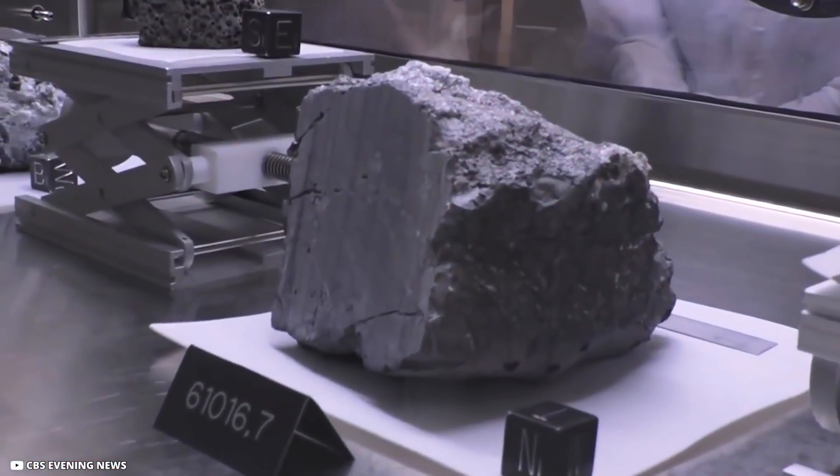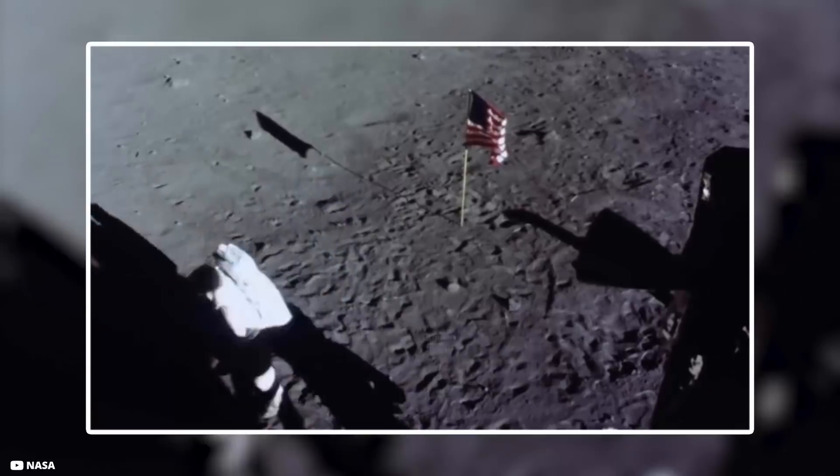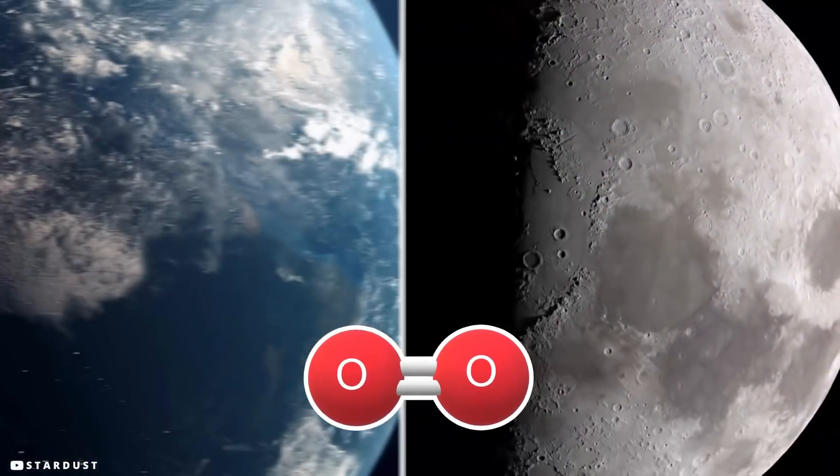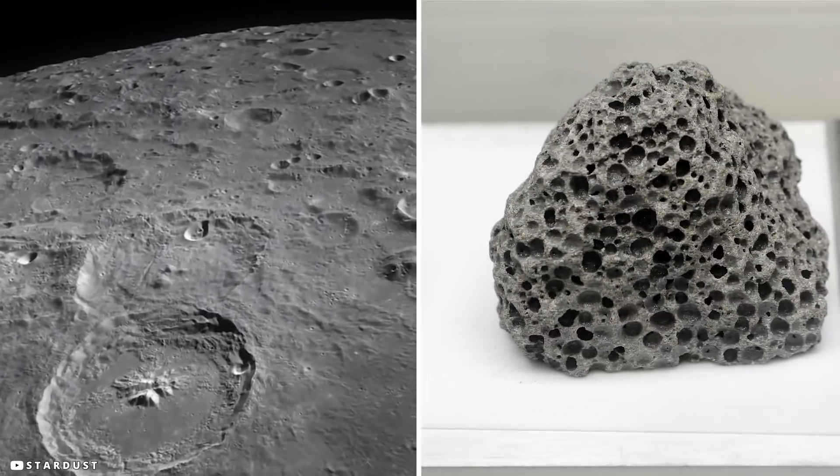This theory is supported by information gained from several investigations of rocks recovered during the Apollo moon landings in the United States. The oxygen isotopes on the Moon are comparable to those on Earth, but distinct from those on other solar system objects, according to lunar samples.